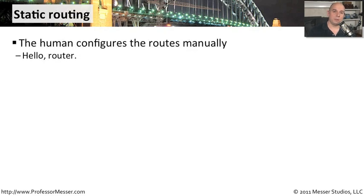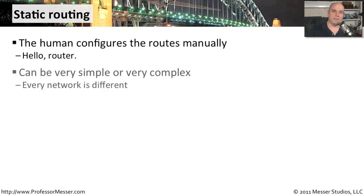As the name implies, static routing is a type of routing method that requires you to statically input all of the different routes. If there is a route that traffic needs to take to get to the internet, you have to program that into your router. If there's an internal server farm and you have to make sure people are able to route properly to it, then you have to configure that in your router. It is all done statically, and it's all up to you to make sure your router knows where all the different routes are in your environment. This can be a very simple process or very complex — it just depends on the architecture of your particular network.